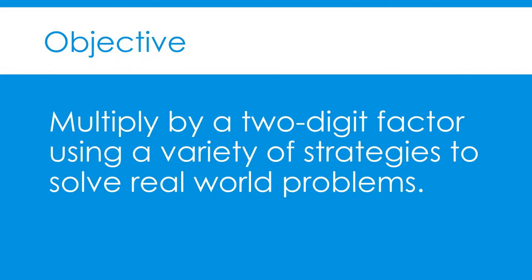We will multiply by a two-digit factor using a variety of strategies to solve real-world problems. Let's break down our objective. We will be multiplying two-digit whole numbers, such as 45 times 72, using a variety of strategies, including area models, partial products, and the standard algorithm.